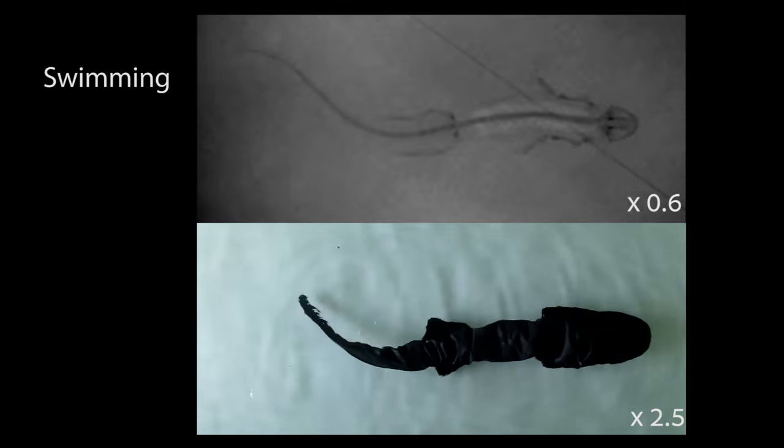So we designed a salamander robot that very closely mimics the real motion of the real salamander. And it can both walk and swim exactly like the real salamander.